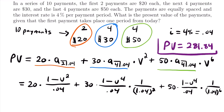$281.84 is the final answer — the present value of these 10 payments. Those are all the examples for this video. If you have any questions, feel free to leave them in the comments. I'll see you next time.